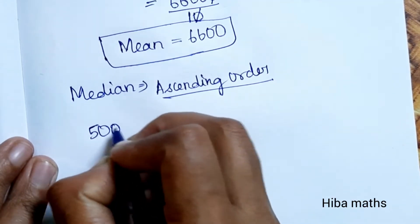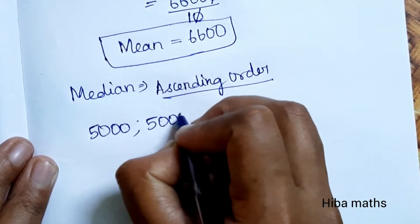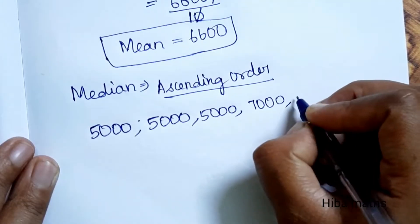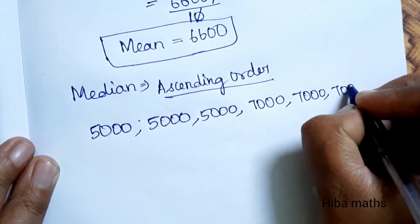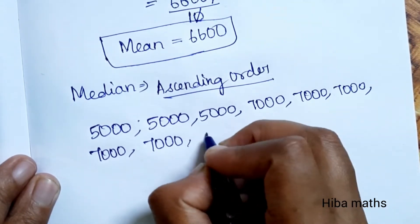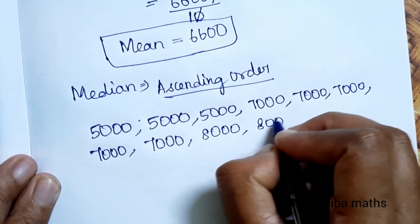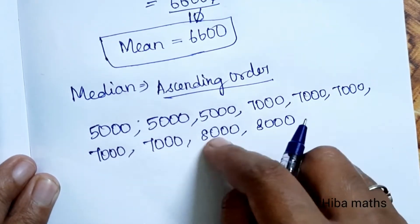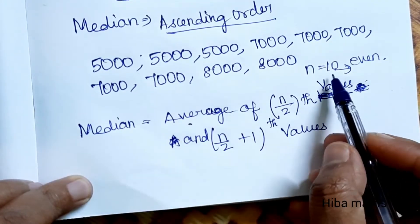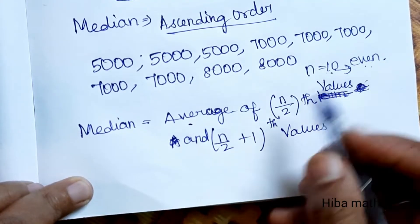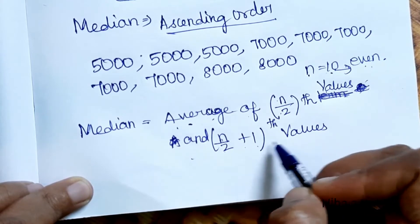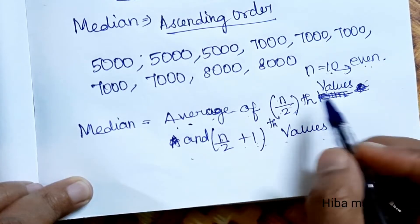Arranging in ascending order: 5,000, 5,000, 5,000, then 7,000 five times, then 8,000, 8,000. The n value is 10. Since n is an even number, the median formula is the average of the n/2 th value and the (n/2 + 1) th value.